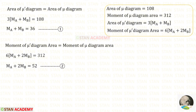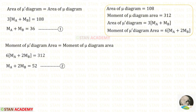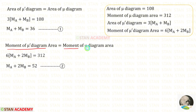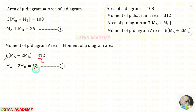Now let us equate the area of the mu dash diagram and the area of the mu diagram. Applying the values: 108 divided by 3 gives 36, so MA + MB = 36 — this is equation 1. Now equating the moment of the mu dash diagram area and the moment of the mu diagram area: 312 divided by 6 gives 52, so MA + 2MB = 52 — this is equation 2.